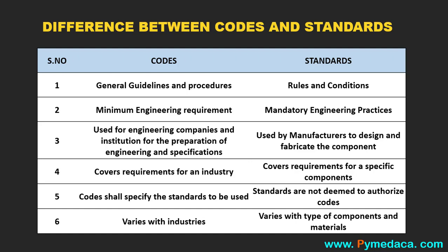The sixth difference: codes vary with industries — oil and gas sectors use different codes, refinery and petrochemical sectors use different codes, and power sectors use different codes. Whereas standards vary with the type of components and materials being used. These are the six important differences between codes and standards.